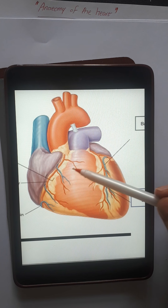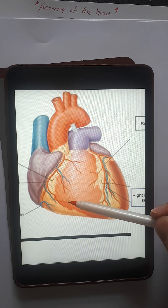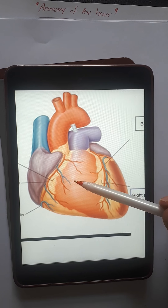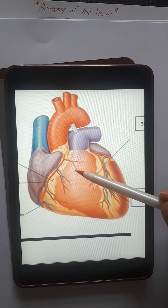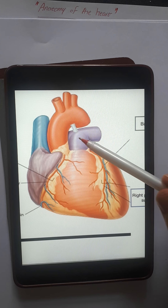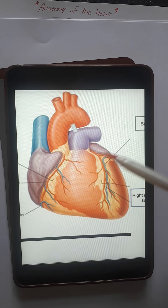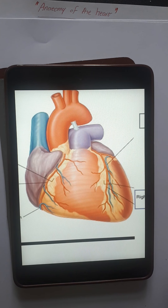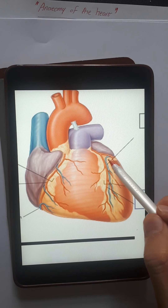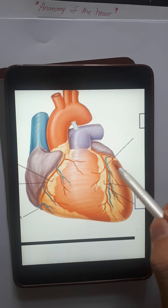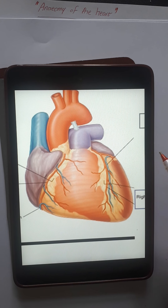Let's focus on the structures and components of the heart — anterior view. The superior vena cava and inferior vena cava bring deoxygenated blood to the right side of the heart, to the right atrium, and then to the right ventricle.